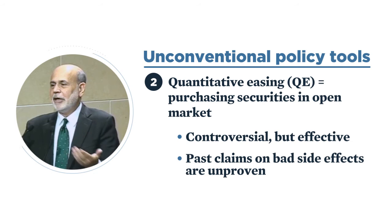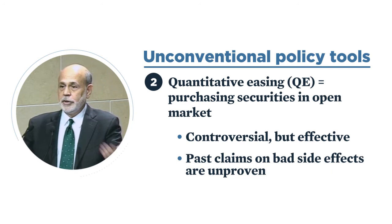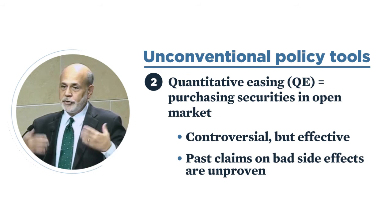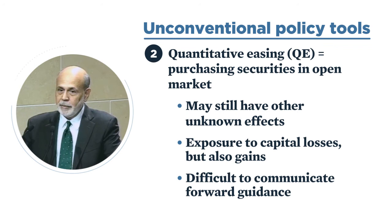The distributional argument in particular I find very unconvincing. Substantively, I don't think QE arguably worsens distribution. It raises stock prices — true, it's supposed to do that — but it also helps debtors versus creditors, helps mortgage borrowers refinance at lower rates, increases house prices in a country with a 60-plus percent home ownership rate, and most importantly, it helps create jobs. There are some issues around uncertainty and fiscal implications, though I argue those are mostly positive rather than negative.